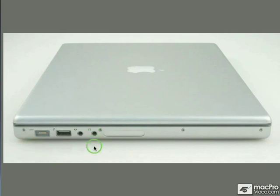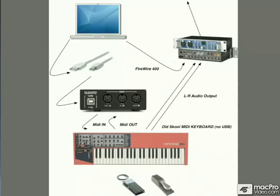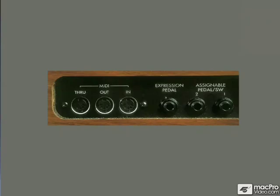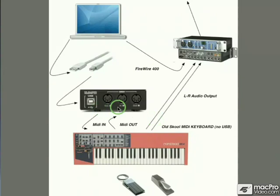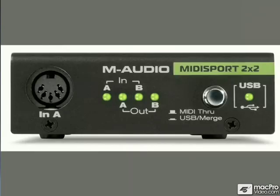If you have an old school keyboard and don't want a laptop visible on stage, you need a way to trigger the computer with it. On the back of an old school keyboard there's no USB — just MIDI, expression, assignable, and so on. So you need a MIDI converter box so that old school keyboard can talk to Main Stage. It's a pretty simple converter box that handles the connection.